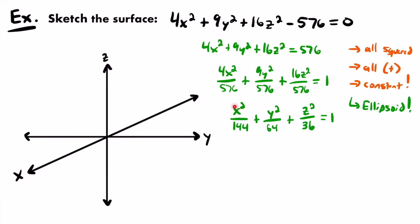So we'll have x²/36 + y²/64 + z²/36 = 1. Now the equation of our surface is in standard form. You can clearly see that it represents an ellipsoid — all the variable terms are positive, all variables are squared, and it equals 1. Now we can sketch our ellipsoid.